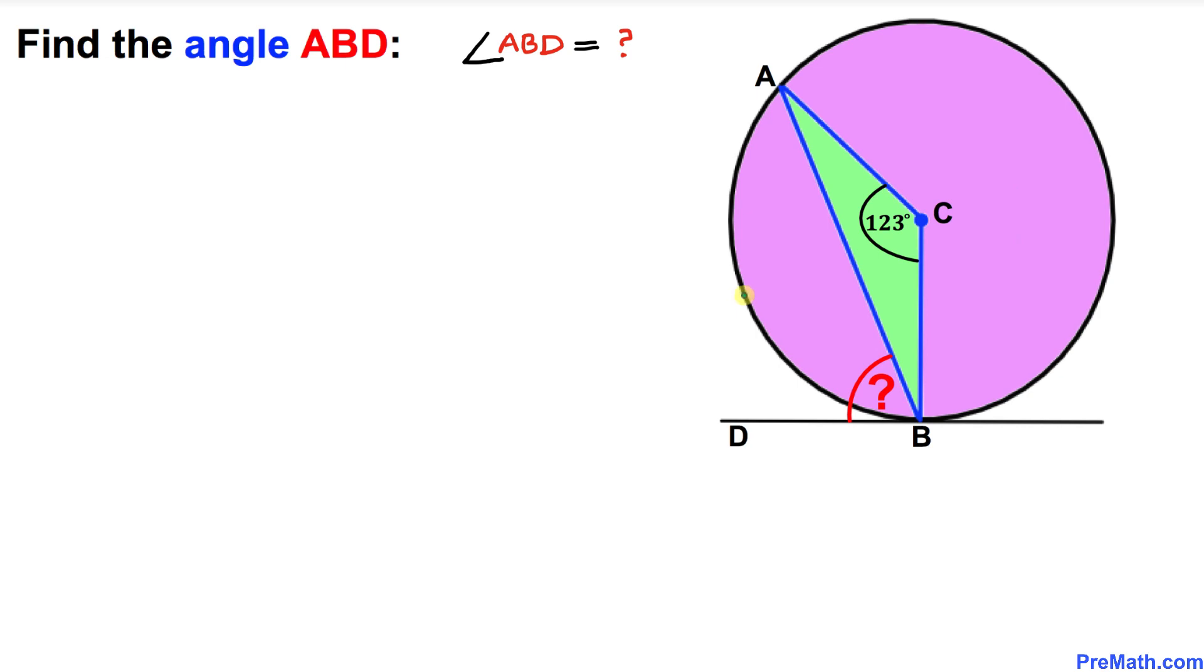Welcome to PreMath. In this video tutorial, we have this purple circle with AC and BC as the radii of this circle. Moreover, we have this green triangle ACB such that angle C is 123 degrees. Furthermore, we got this BD as a tangent line to this circle.